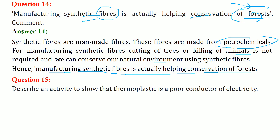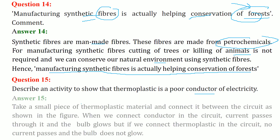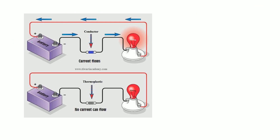Describe an activity to show that thermoplastic is a poor conductor of electricity. Set up a circuit with a battery, a bulb, and a conductor. When a conductor is placed in the circuit, current flows from negative to positive and the bulb glows. But when thermoplastic is placed in the circuit, the bulb does not glow because thermoplastic is a poor conductor of electricity and the circuit cannot be completed.